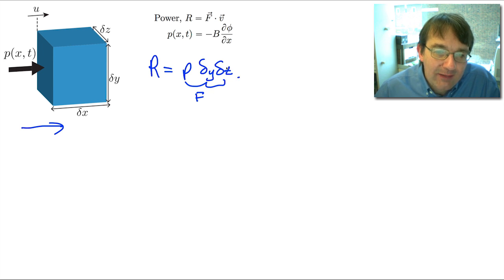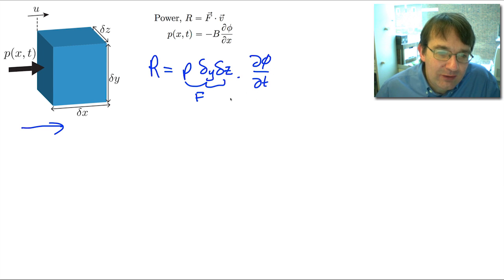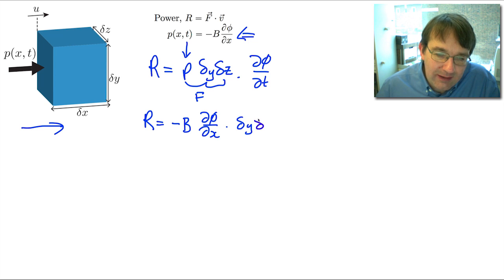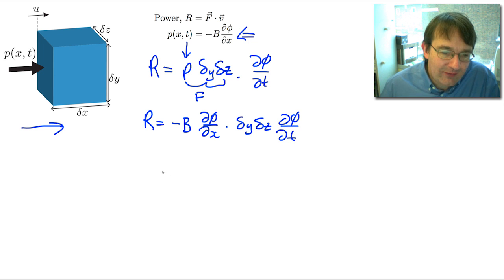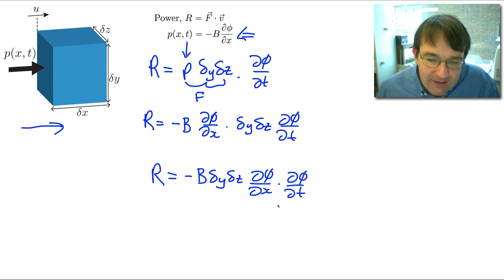The velocity is simply the rate of change of displacement with respect to time at a given position - a partial derivative, since we have two variables. We can also use the equation derived before to relate the pressure deviation to the displacement of the fluid, and substitute that in. Our power is then equal to minus B times the partial of phi with respect to x, times delta y delta z, times the partial of phi with respect to t. Tidying that up: power equals minus B times delta y delta z times (∂φ/∂x)(∂φ/∂t).